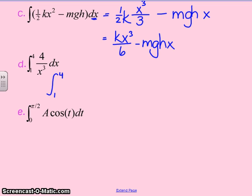So, it's the integral from 1 to 4 of 4 times x to the negative 3 dx. The integral of 4 times x to the negative 3 is 4 times x to the n plus 1, negative 3 plus 1 is negative 2, divided by negative 2.